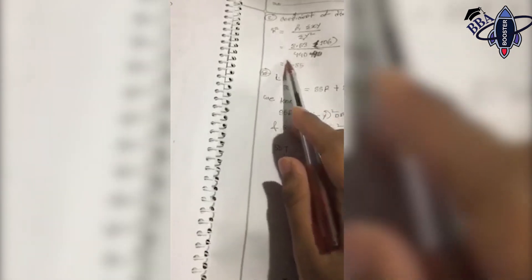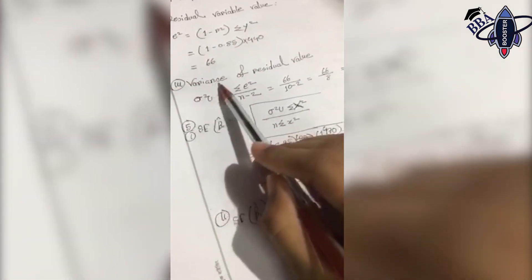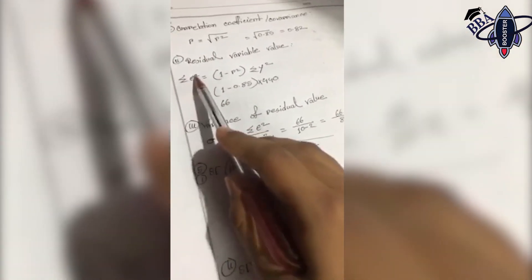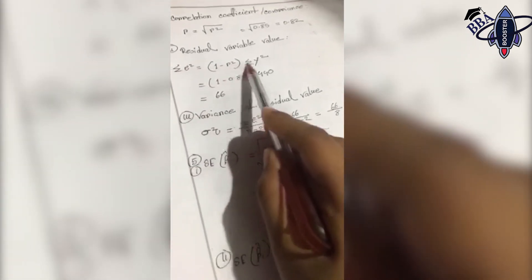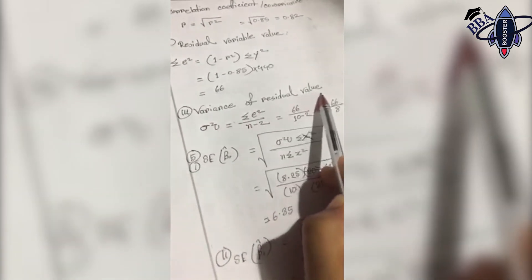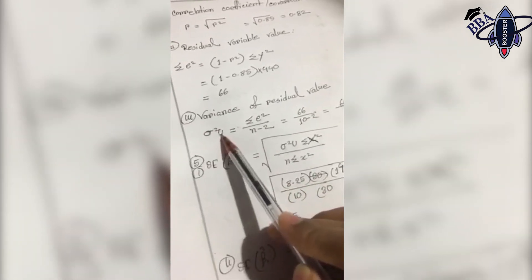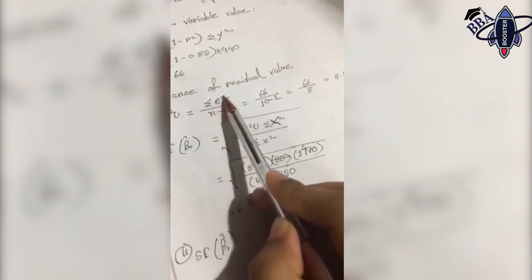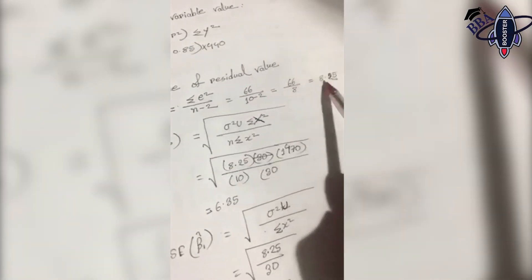Here is the variance of residuals for our advertisement-sales model. The residual variable value is 1 minus r-squared times summation of y-squared, which is 1 minus 0.85 times 440. Sigma-squared error equals summation of e-squared divided by n minus 2, giving 66 divided by 8, equal to 8.25.